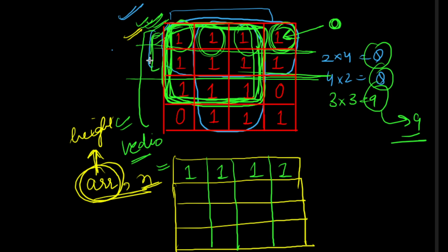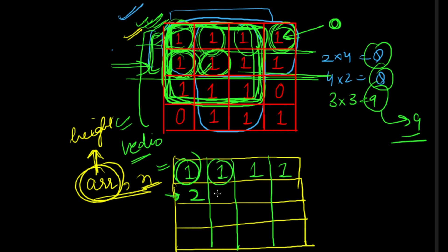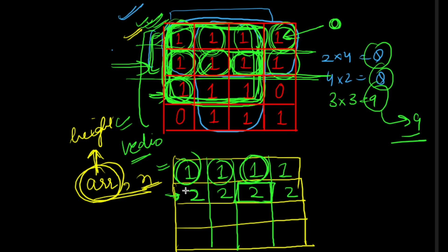For the first row as base, the height of each bar equals the element value — all ones give height one. For the second row, we check whether the original matrix has one at that index; if yes, we update it by adding the current value to the previous row's value, giving two. This continues column by column for each row.